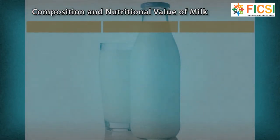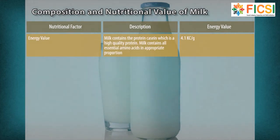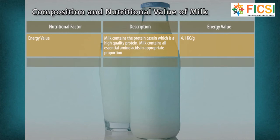The following table explains the composition of milk. Nutritional factor: Energy value. Description: Milk contains the protein casein, which is a high quality protein. Milk contains all essential amino acids in appropriate proportion. Energy value: 4.1 kilocalories per gram.